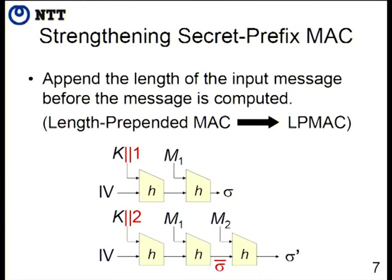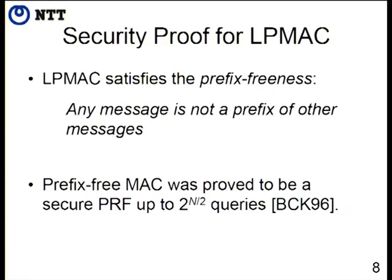LPMAC prevents the length extension attack. The attacker asks for a one-block message M1 and obtains sigma, then appends another message M2. But in this case, the length-prepended value becomes different, so the internal state value will change, making the computation no longer useful. The length-prepend works very well and has a security proof. LPMAC satisfies prefix-freeness, meaning no message is a prefix of another. Prefix-free MAC was proved to be a secure PRF up to 2^N queries — this was done by Bela et al. in 1996.